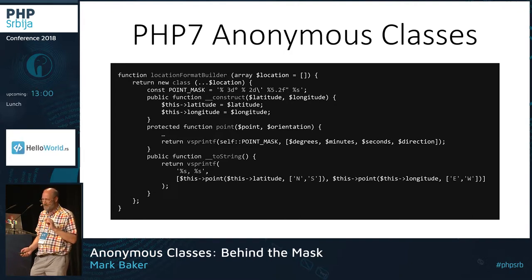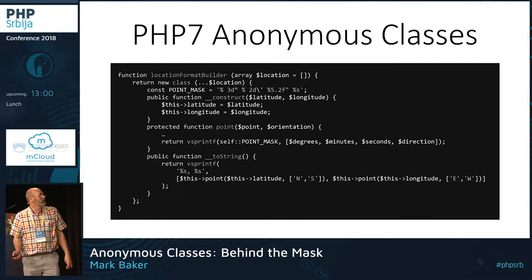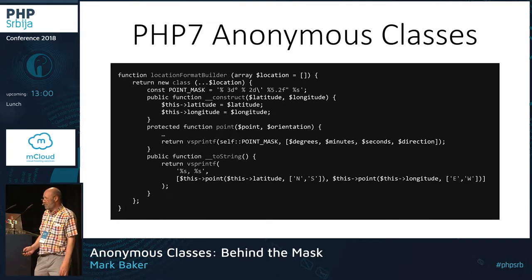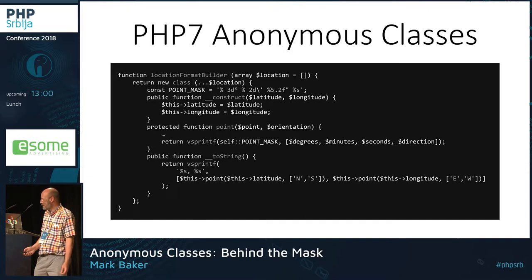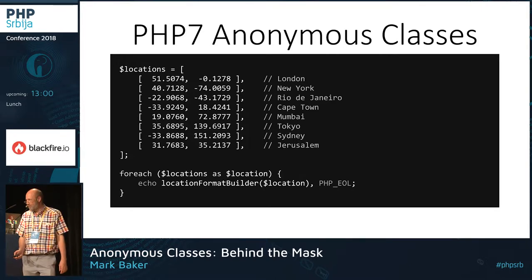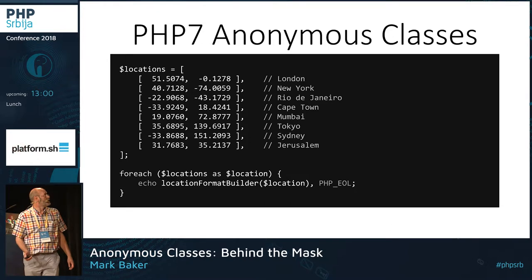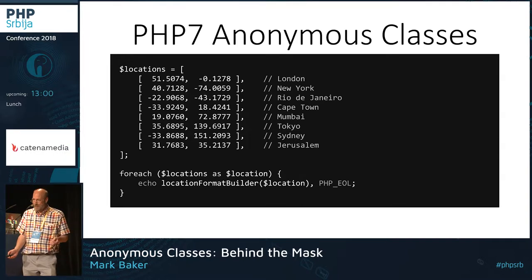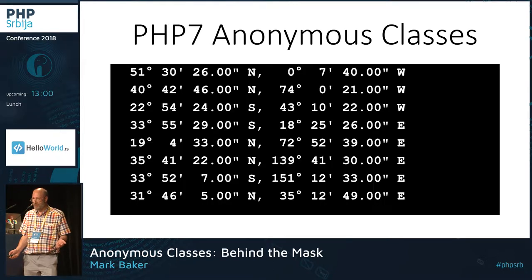I can then call the function multiple times and it will create instances of the same class, because the position in memory is the same. This particular example is simply a formatter — it implements the __toString method so that I can echo the instance of that anonymous class. I pass it a set of latitude-longitude values and use echo to display the output. It's just a glorified decorator.